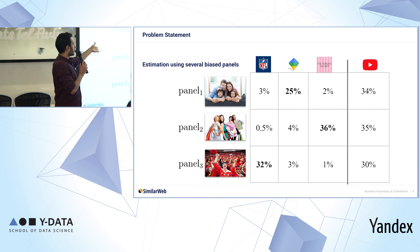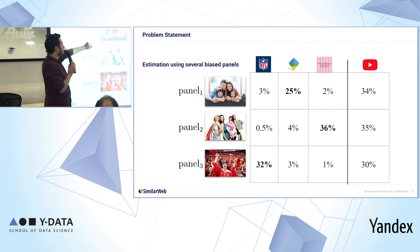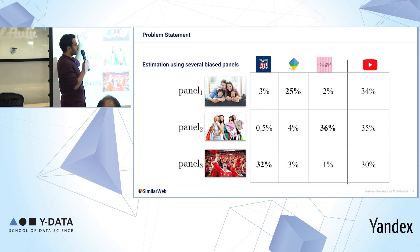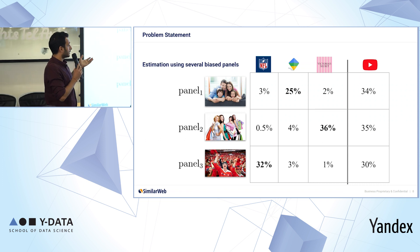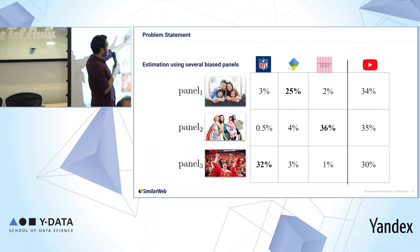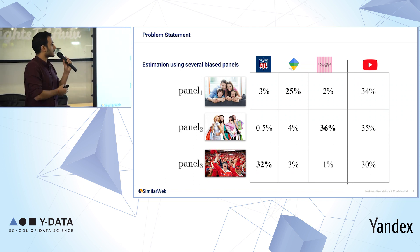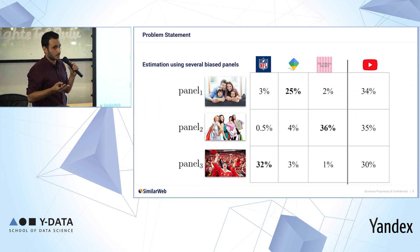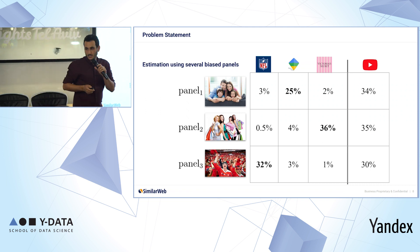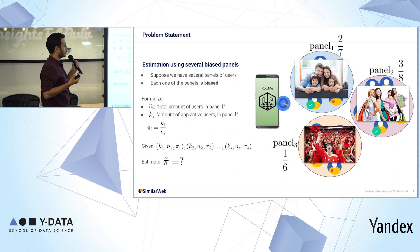The same goes for the other panels. Looking at the Google family tracking app, we see that panel one — which we assume is biased towards fresh parents — is overestimated at 25%. We don't think 25% of the population uses this app; the truth is somewhere between the 25%, 4%, or 3% we see in the other two panels. I also gave YouTube as an example — a big app that might be a bit less biased, because nearly all of us use YouTube.